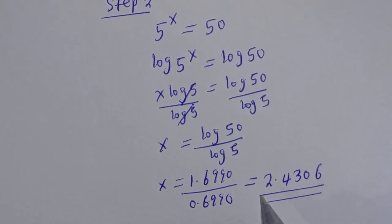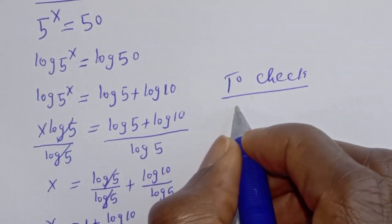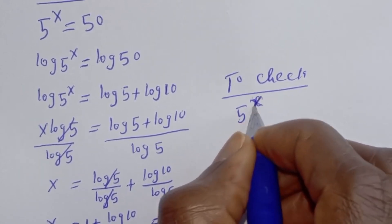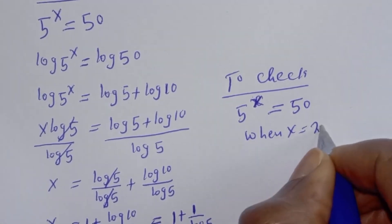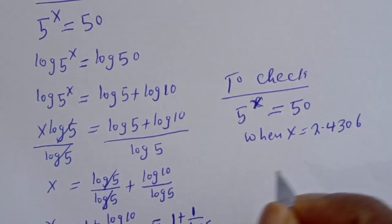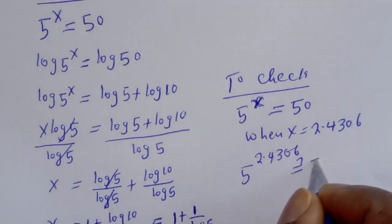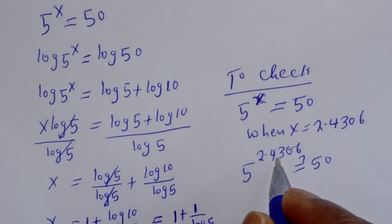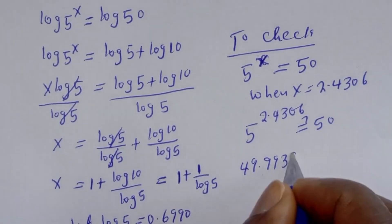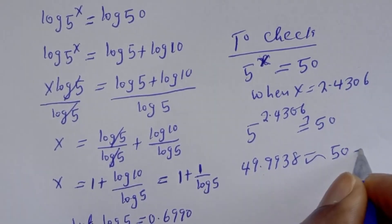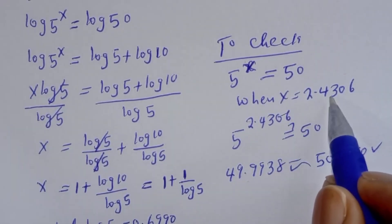Let's check to confirm if our answer is right. We have 5 raised to power s is equal to 50. When s is equal to 2.4306, we have 5 raised to power 2.4306, which gives 49.9938, approximately equal to 50. This satisfies the given equation at s equal to 2.4306.